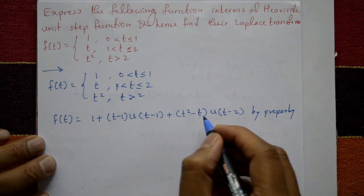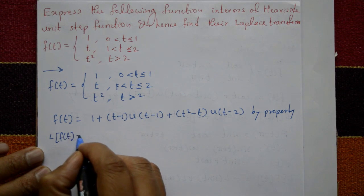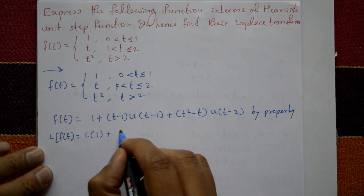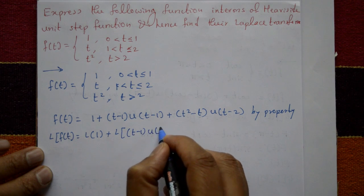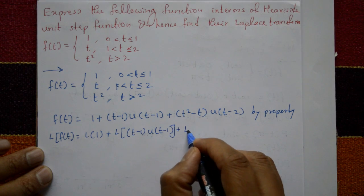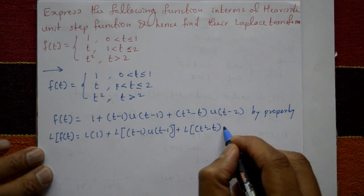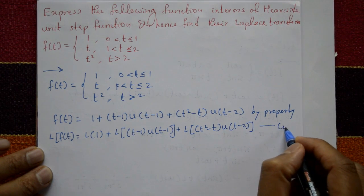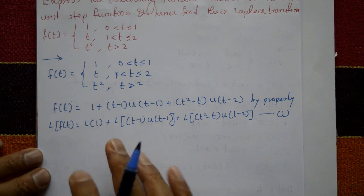Now applying the Laplace transform on both sides: L{f(t)} = L{1} + L{(t − 1)·u(t − 1)} + L{(t² − t)·u(t − 2)}. Call this equation number 1. The Laplace of 1 is simply 1/s.